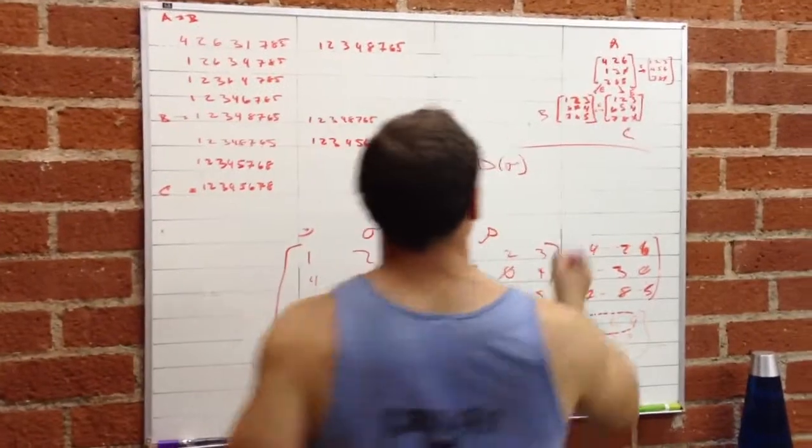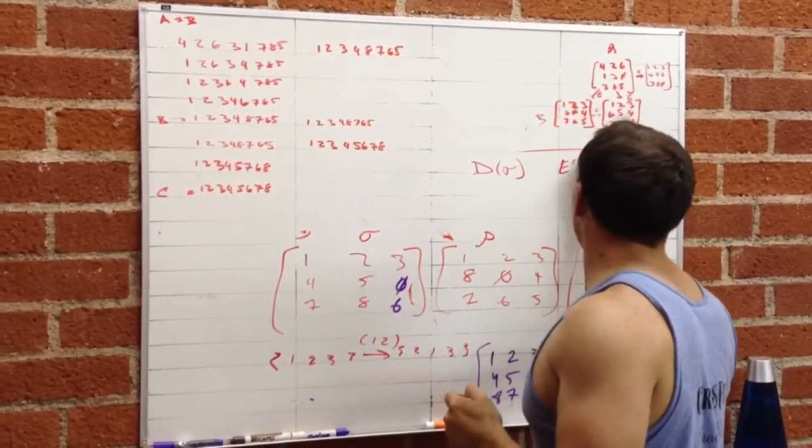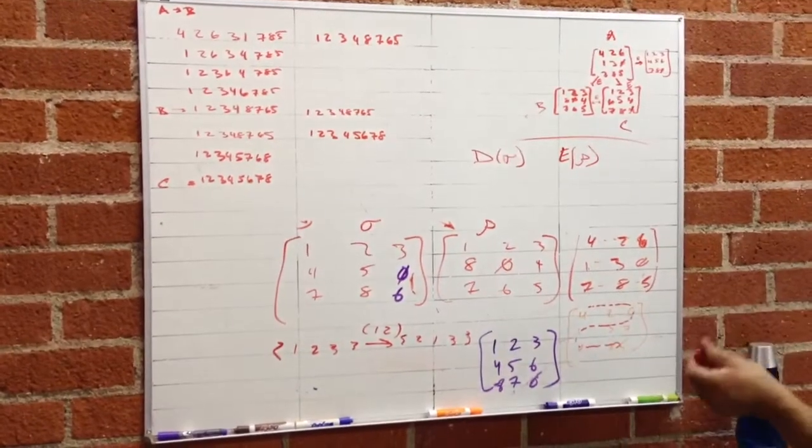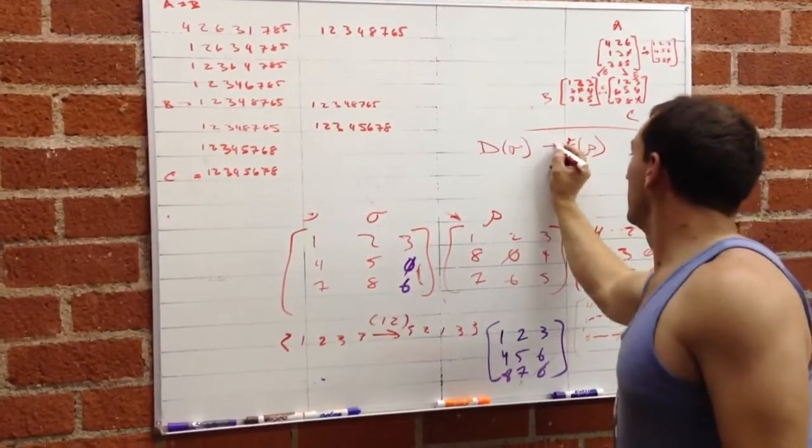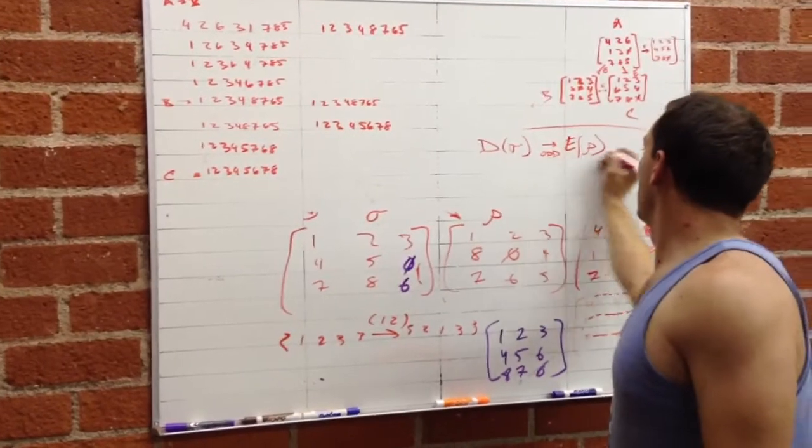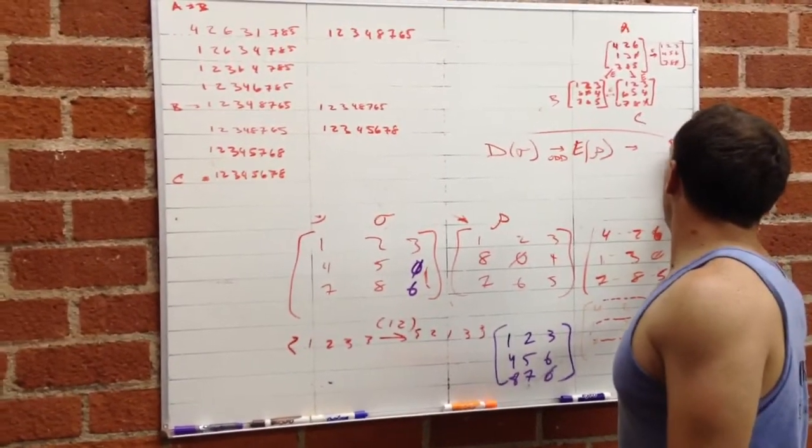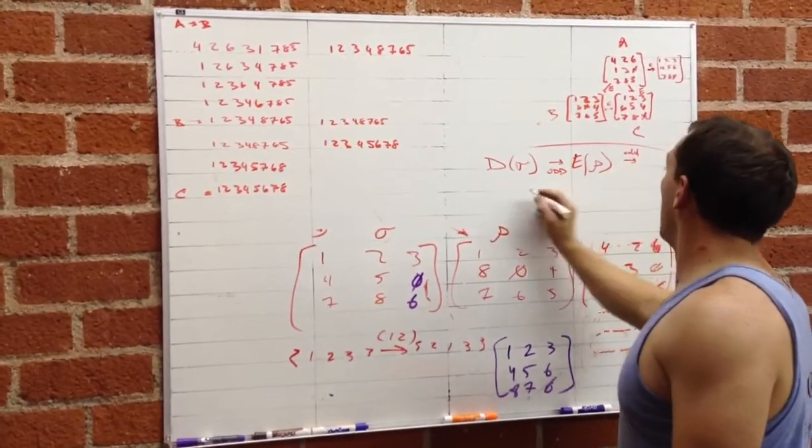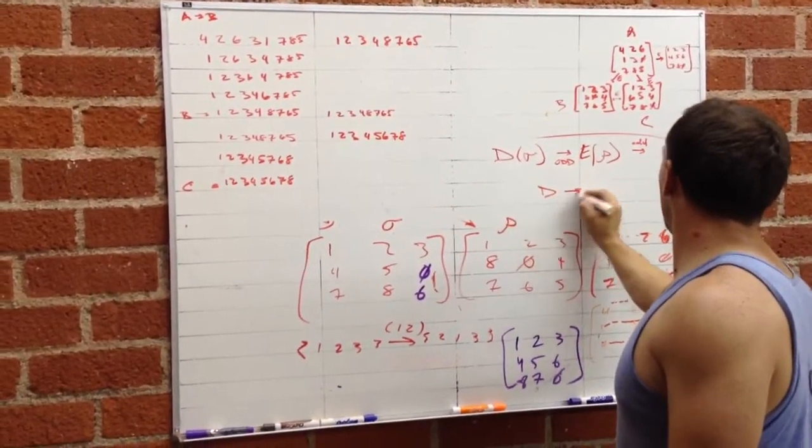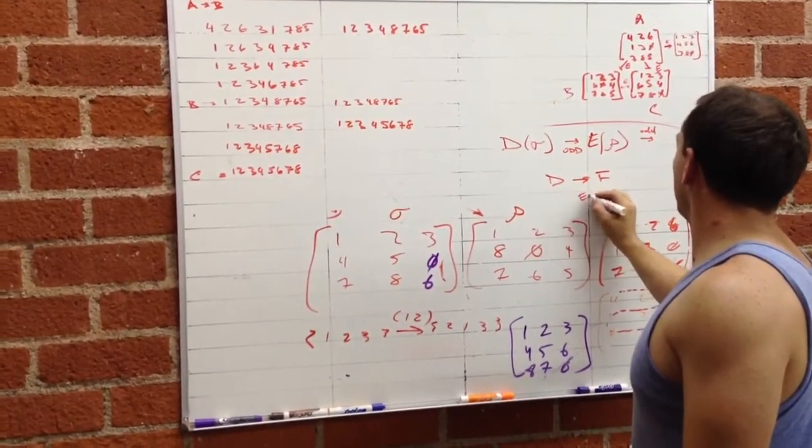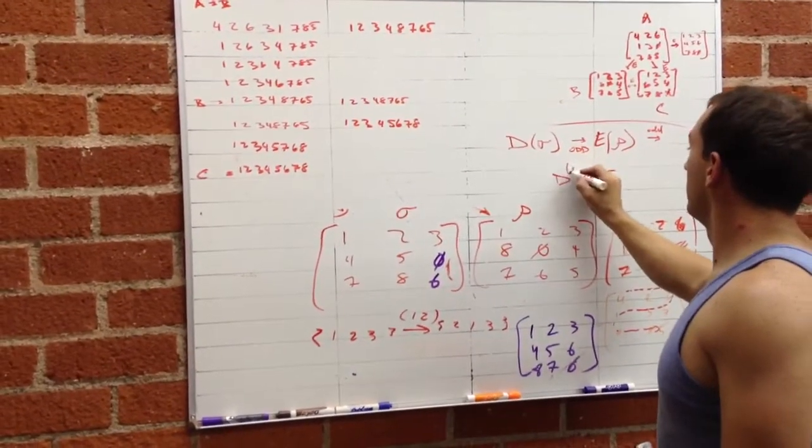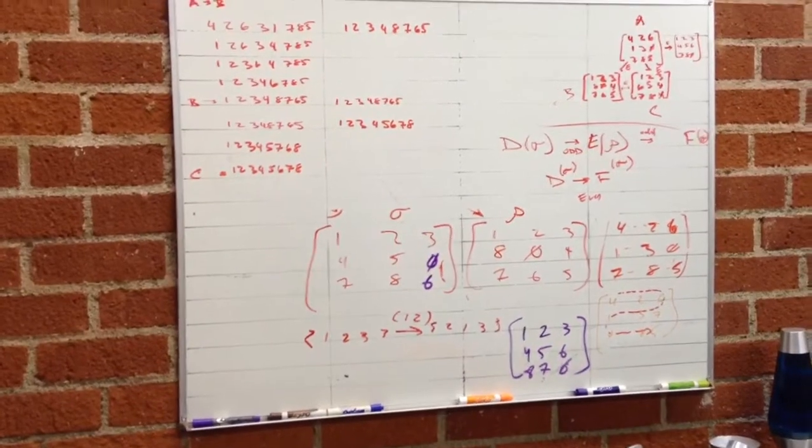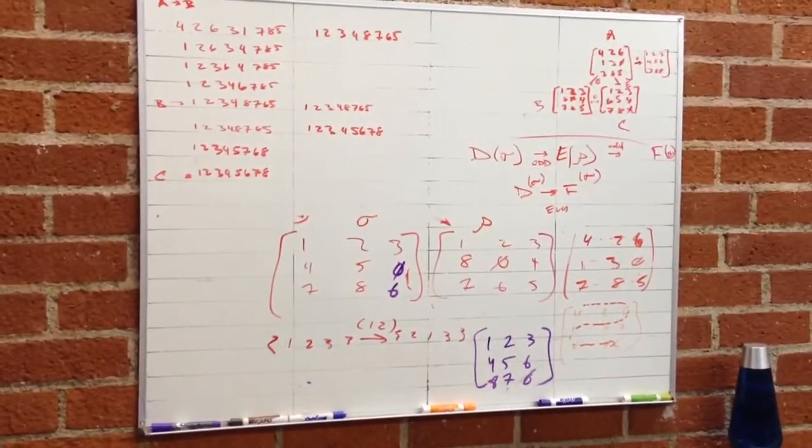However, E is part of this disjoint set rho. It's an odd number of steps to get here, but F is going to be in set sigma. And then an odd number of steps to get to F. However, D to F would be even because it's sigma to sigma. That's right. Does that make sense? It does.